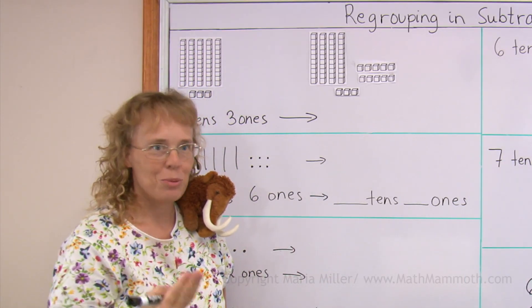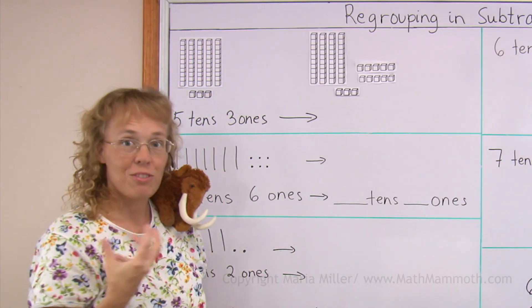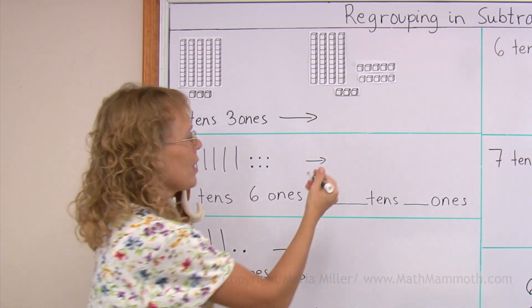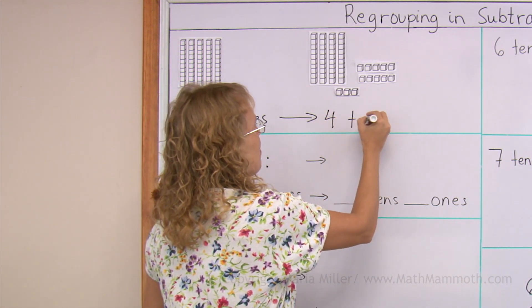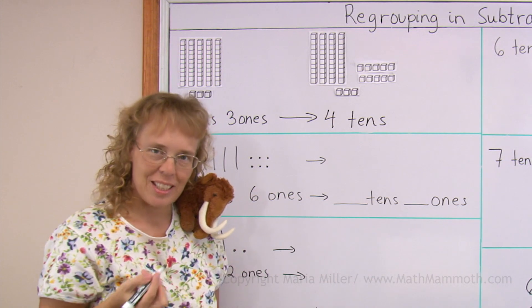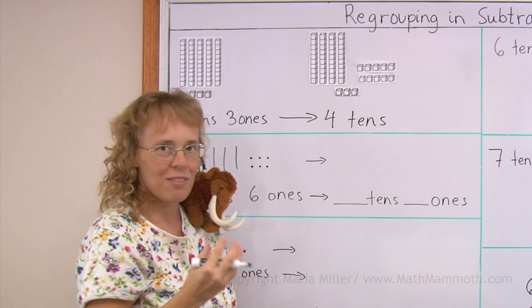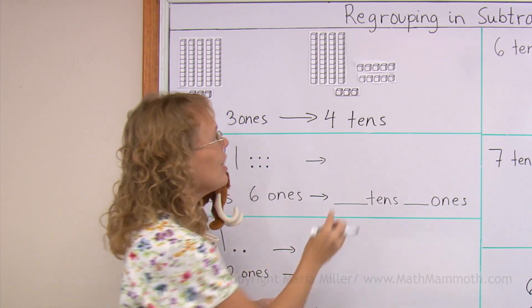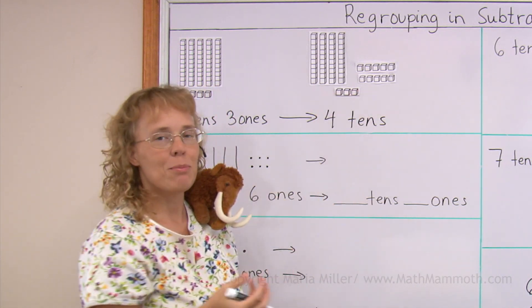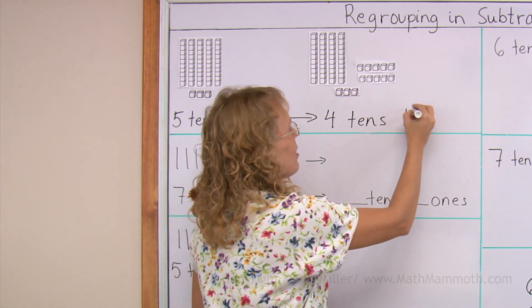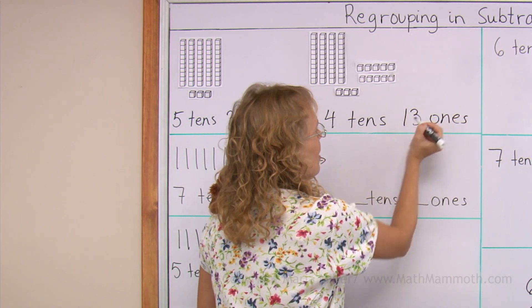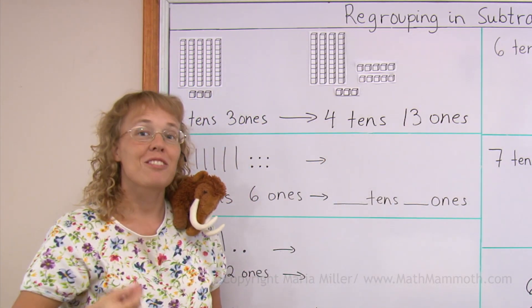Here's the answer after regrouping. We see we have just four tens left, right? So I'll write four tens. But how many ones now? You see we have ten new ones that came from the ten that was broken down. And then we have the three that were there before. So we have thirteen ones.